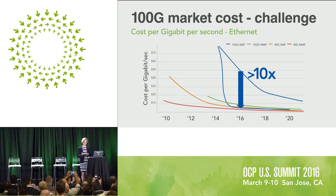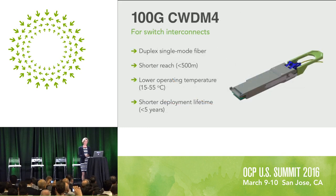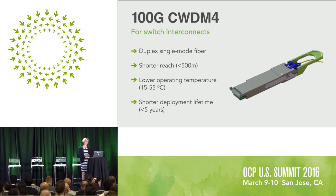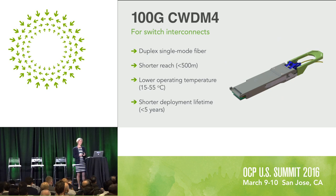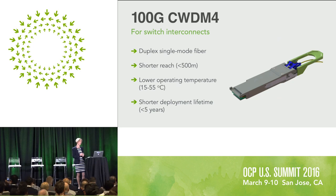We reduced cost by tailoring specifications to our particular environment. This is OCP — this is all about sharing. We chose duplex single-mode fiber, and the first parameter we optimized is reach: it doesn't need to be 10 kilometers. All of our links are less than 500 meters, and this is true of very many different kinds of data centers. Specifying reach shorter than 500 meters is something very useful for the whole community.